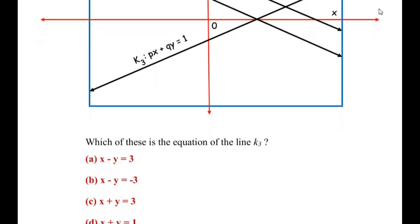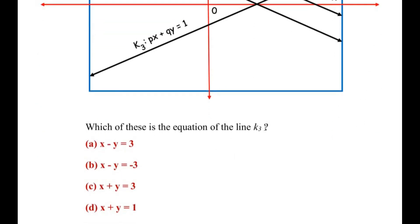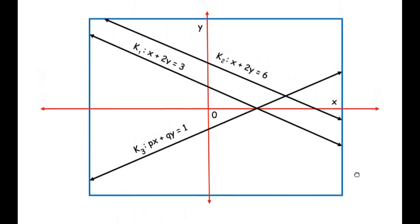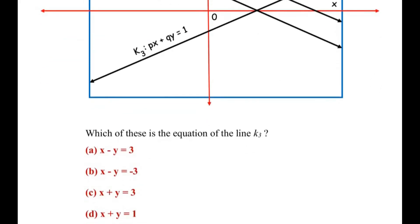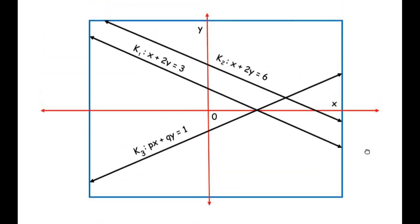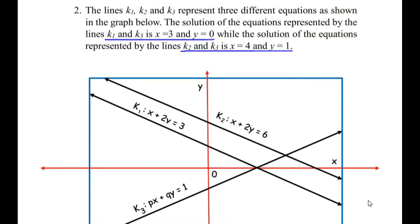We need to find which equation represents the line k3. From the graph, k3 is given as a general equation px + qy = 1. They have given hints in the question: the solution of the equations represented by lines k1 and k3 is x=3 and y=0.